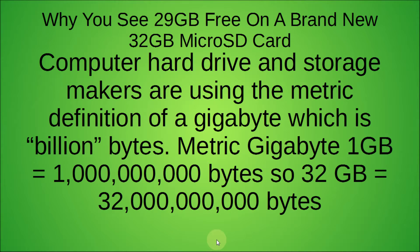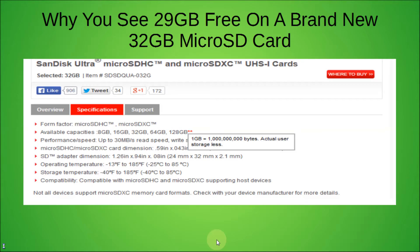Computer hard drive and storage makers are using the metric definition of a gigabyte, which is 1 billion bytes. So 32 metric gigabytes would be exactly 32 billion bytes. You can see this by going to the SanDisk Ultra page — the kind of micro SD card I'm using — and they actually tell you under available capacities that 1 gigabyte equals 1 billion bytes, and after that it says actual user storage less.